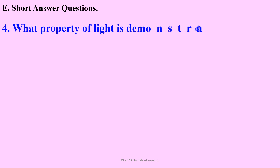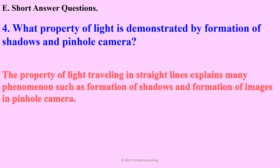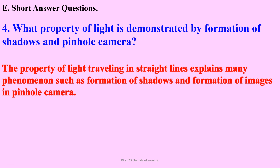What property of light is demonstrated by formation of shadows and a pinhole camera? The property of light traveling in straight lines explains many phenomena, such as formation of shadows and formation of images in a pinhole camera.